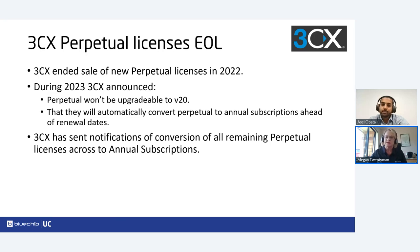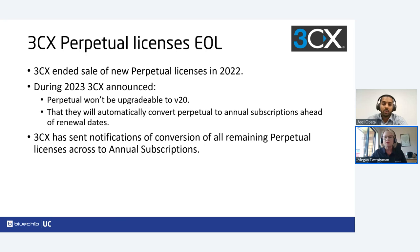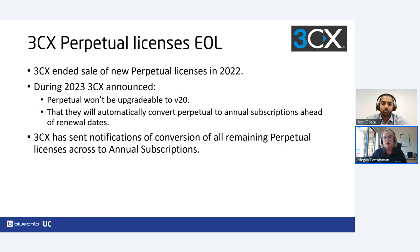Perpetual licenses for 3CX have been end of life since 2022. During 2023, 3CX announced that perpetual licenses would not be upgradable to Version 20 and they would start converting those to annual subscriptions — that will continue, as there are no perpetual licenses moving forward. The renewal dates will be the same date your perpetual license was due to expire. If you have customers on perpetual licenses on older builds without maintenance, they cannot connect to the 3CX activation server and have no further conversion options — please reach out so we can work with you.